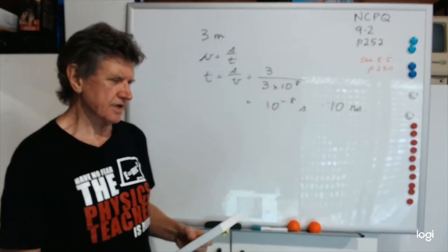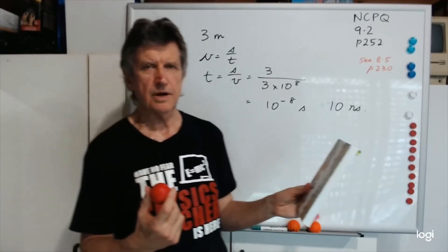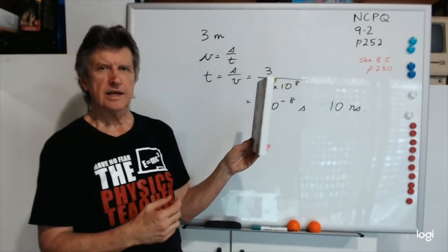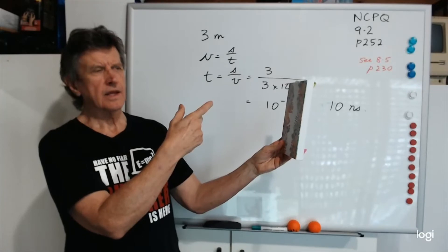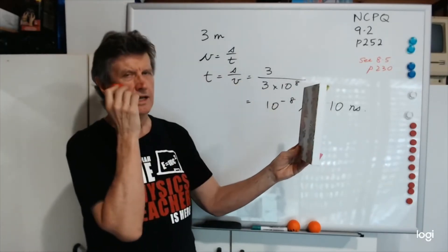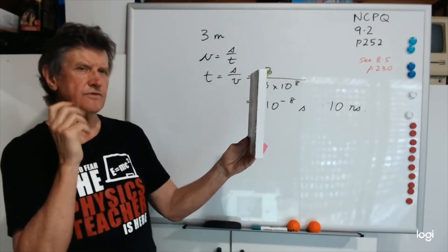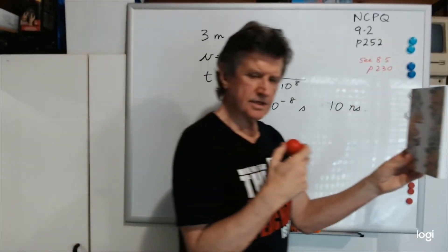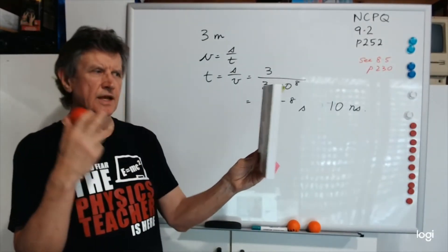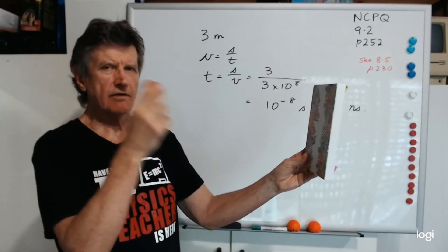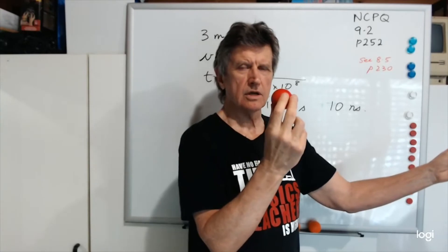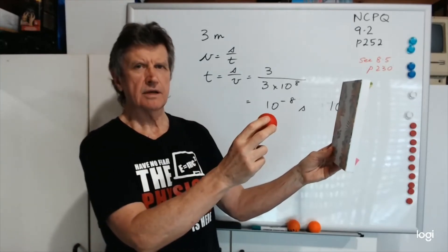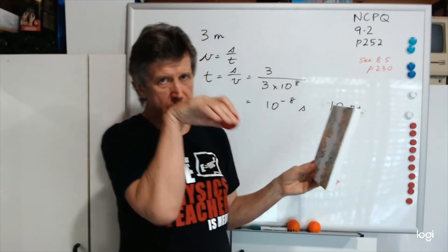Einstein posed a famous question: what would you see in a mirror if you were running at the speed of light? If light leaves your face at 1c and the mirror is moving away from you at 1c, the light would never catch the mirror. So would the mirror appear blank? That was the paradox Einstein posed.